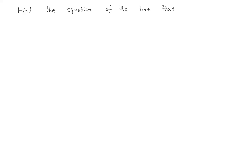Find the equation of the line that goes through the point (1, 3) and has slope 2.